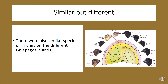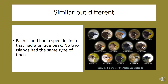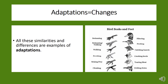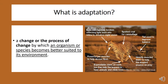There are also similar species of finches on the different Galapagos Islands. Each island had a specific finch with a unique beak — no two islands had the same type of finch. All of these similarities and differences are examples of adaptations. Adaptation is a change, or the process of change, by which an organism or species becomes better suited to its environment.